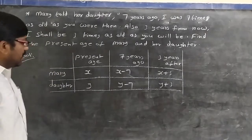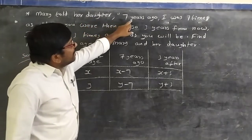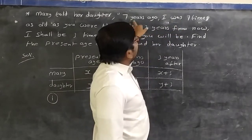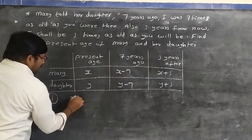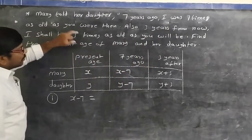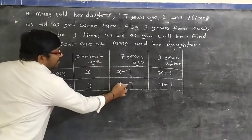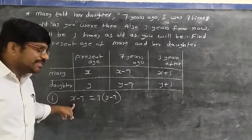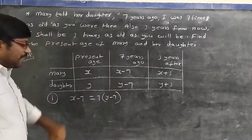There are two situations. First situation: seven years ago, Mary was seven times as old as her daughter. So x − 7 = 7(y − 7). Second situation: three years from now, Mary will be three times as old as her daughter: x + 3 = 3(y + 3).